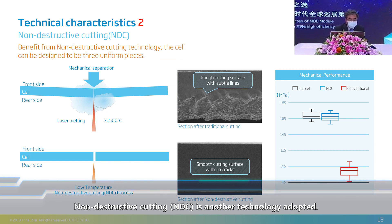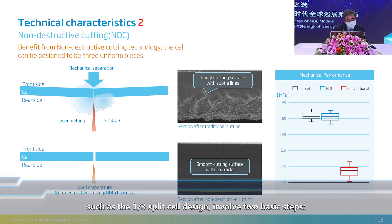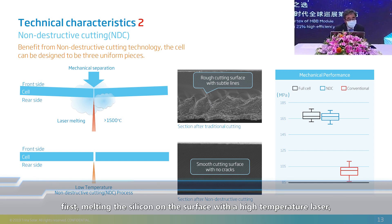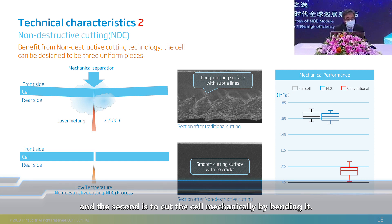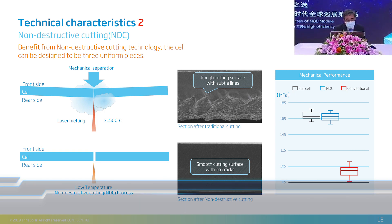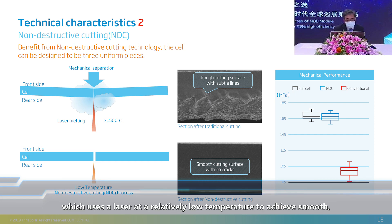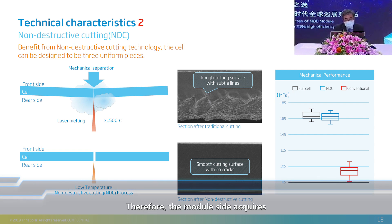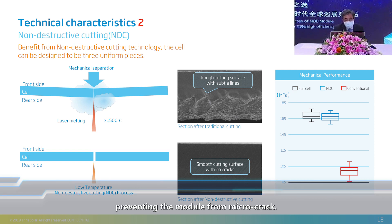Non-destructive cutting, NDC, is another technology adopted. Traditional cutting of split cells involves two steps: melting the silicon surface with a high-temperature laser, then cutting the cell mechanically by bending it. This is common practice but creates cross-section problems. Our NDC technology uses a laser at a relatively low temperature to achieve smooth, burr-free cross-sections. Therefore, the module side acquires better pressure-resistance performance, preventing the module from micro-cracks.